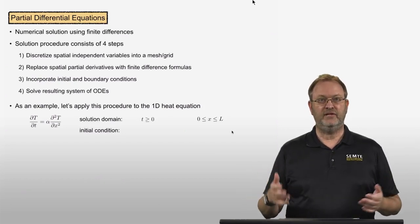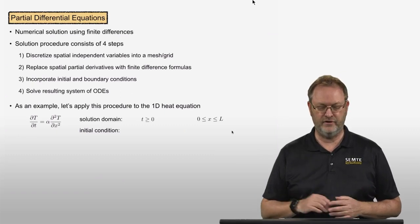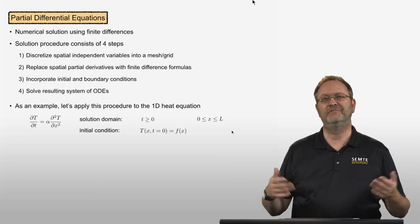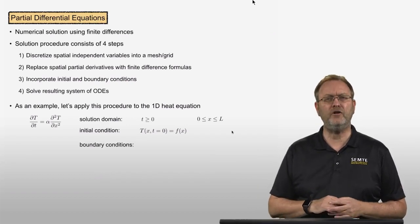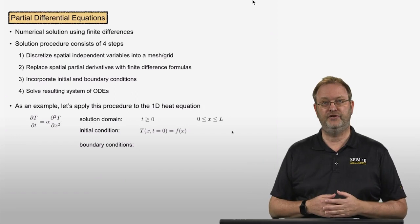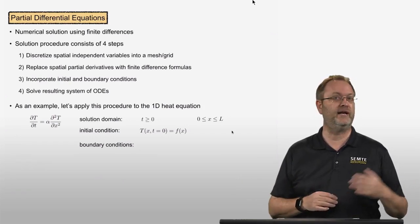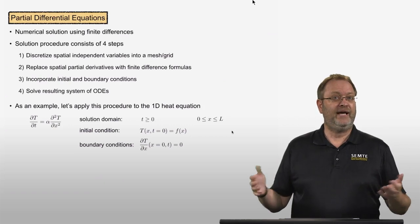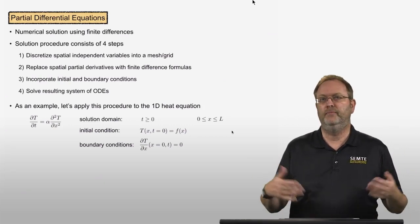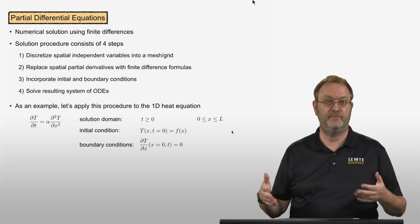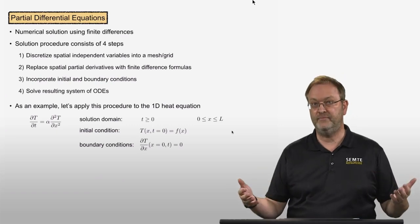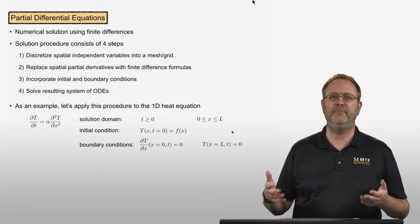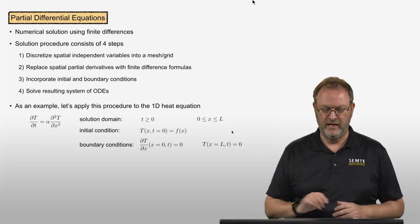For a PDE like this that contains time, we have to provide an initial condition. Here the initial condition at time equal to zero along the spatial direction x is some given analytical function f of x. We also have to provide two boundary conditions, one at each end: one at x equal to zero and one at x equal to L. Let's say we have an adiabatic boundary at x equal to zero, meaning the partial derivative of temperature with respect to x at the left bound equals zero for all times t. And at the other end, we hold the temperature equal to zero.